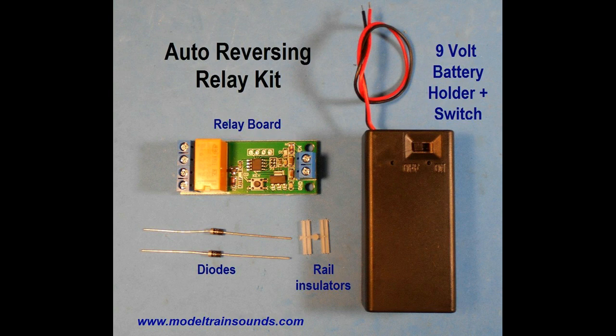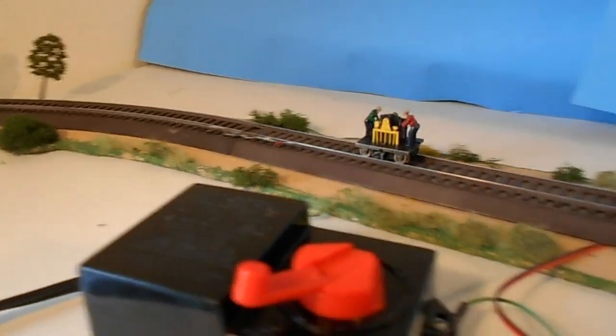If you wish to try this project, you can order this kit online at the website www.modeltrainsounds.com. The kit includes an auto-reversing relay board, the 9V battery pack, two N1007 diodes and two track insulators for HO scale along with full instructions. Instructions in color are also available in download PDF file format at the website.